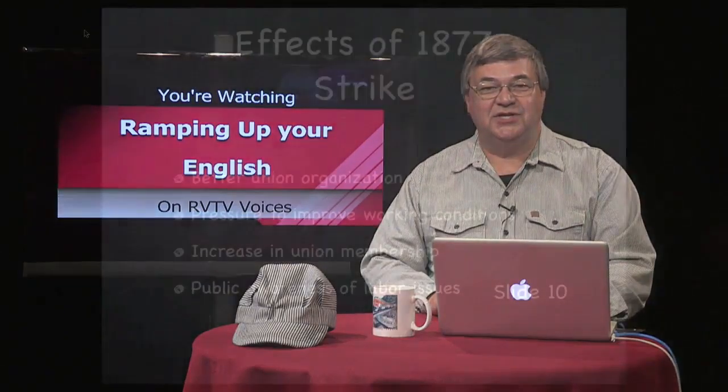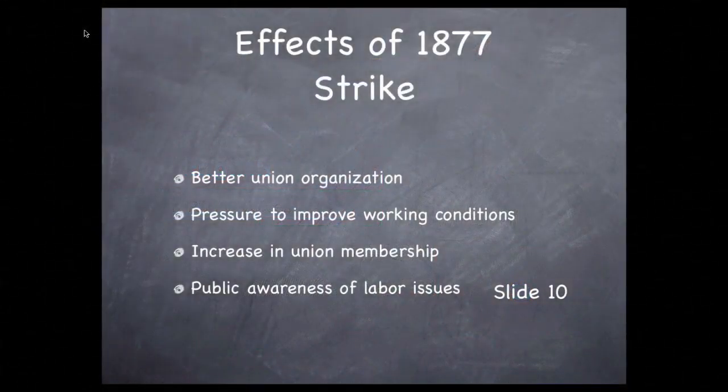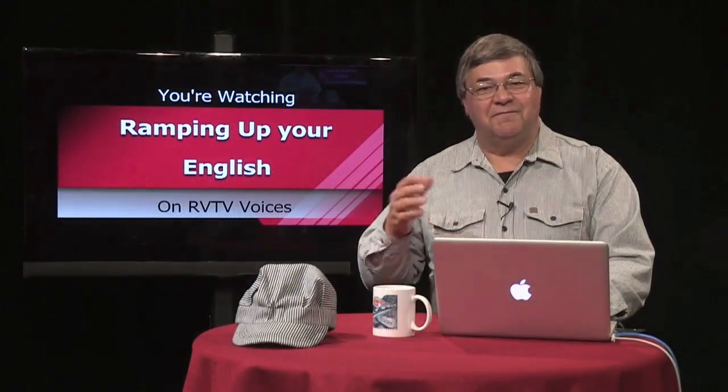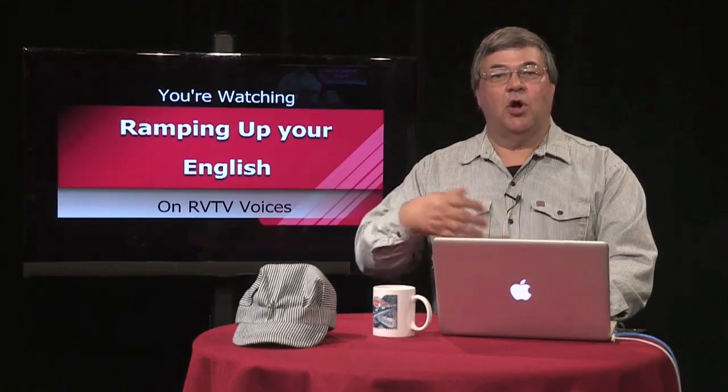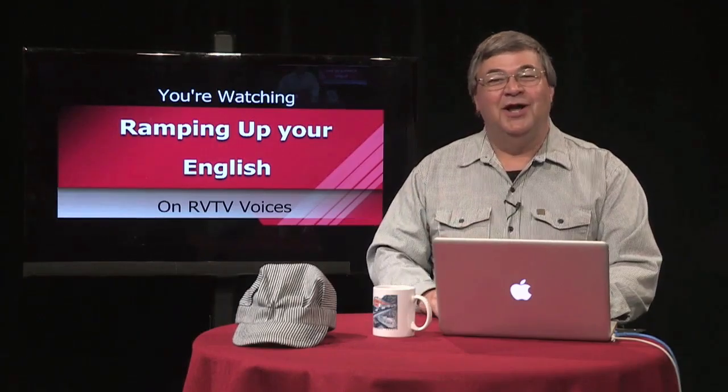An example may be: 'I was late for work due to heavy traffic.' The effects of the Great Railroad Strike of 1877, as well as other effects, became causes of other changes, such as better union organization, pressure to improve working conditions, increase in union membership, and public awareness of labor issues. Thus, the effects of our first cause now become the causes of a list of other effects. As I said before, complex issues have complex cause-effect relationships.